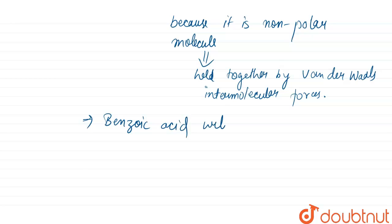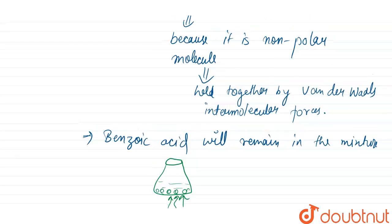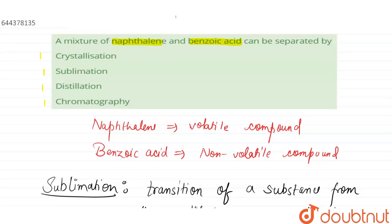Suppose I have a beaker containing benzoic acid and naphthalene. If I provide heat, solid naphthalene will turn into vapors and the remaining will be benzoic acid, because naphthalene is a volatile compound that can easily sublime. So we can use the method of sublimation. Crystallization, distillation, and chromatography will not be applied. Option number two — sublimation — is the correct answer.